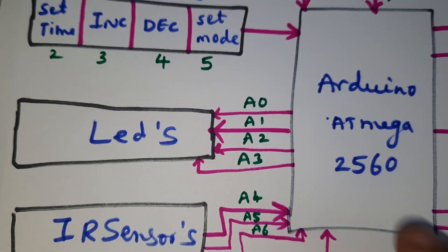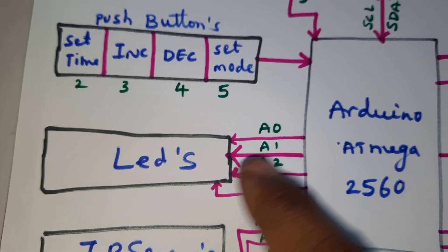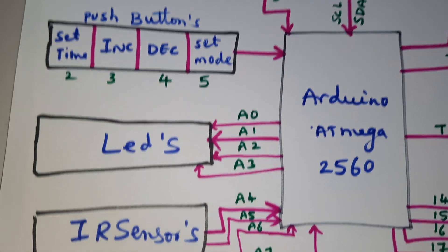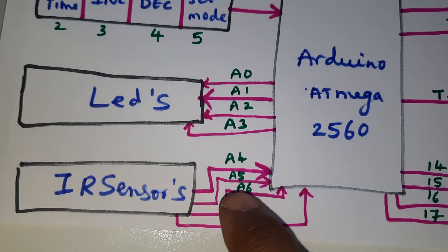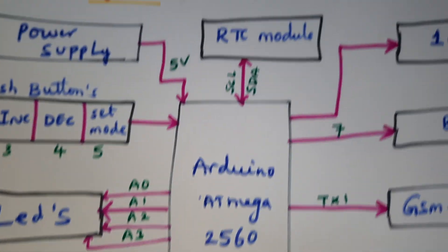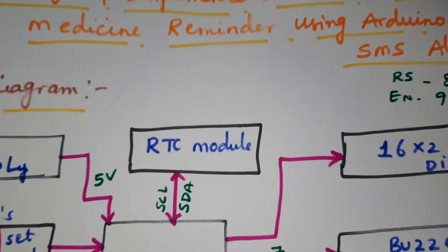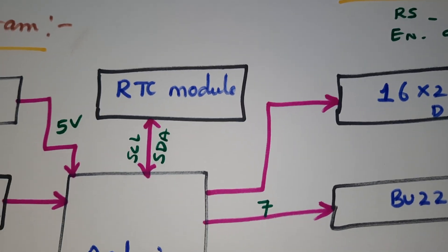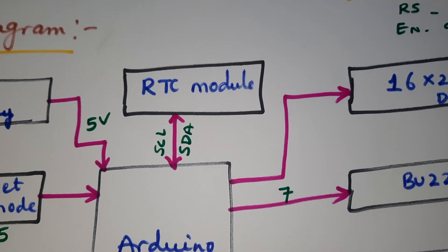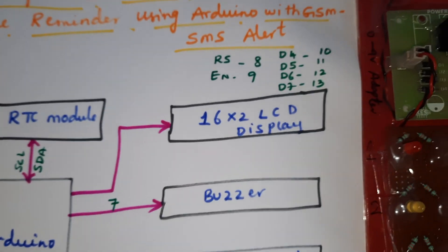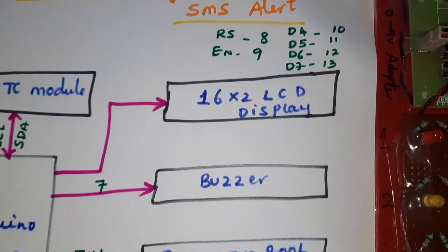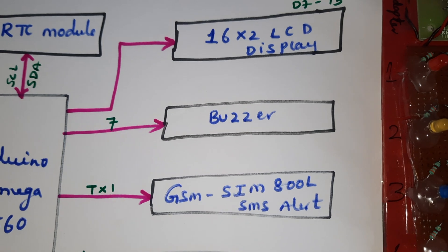LED indicators show whether medicine is taken or not for the first, second, third, and fourth medicines. Four IR sensors connected to pins A4, A5, A6, A7 detect if medicine is taken and send signals to the Arduino board. We are also using an RTC DS3231 module with SCL and SDA (serial clock and serial data) connections, and a 16x2 LCD display with pins RS, Enable, D4, D5, D6, D7 on pins 8 through 13.